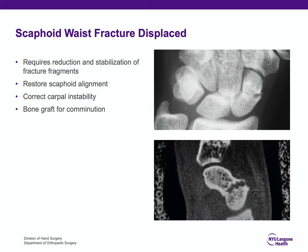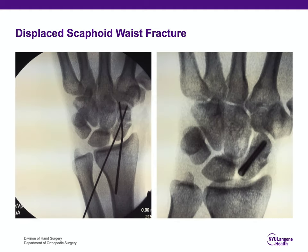For displaced scaphoid waist fractures, the treatment is reduction and stabilization of the fracture fragments, which will restore scaphoid alignment and correct carpal instability. Bone grafting is sometimes needed for comminution. This is a CT scan of a displaced scaphoid waist fracture where I used a wire to maintain the reduction and a guide wire for screw placement — a waist fracture done through a dorsal approach — and this is the screw fixation.